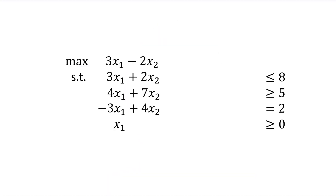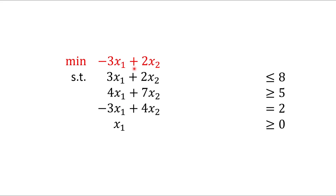Let's look at an example LP which is obviously not in standard form. To bring it into standard form we must address its issues. The first issue is that it wants to maximize a linear objective, whereas standard form requires minimization. We fix this by minimizing minus the objective — maximizing some function is equivalent to minimizing minus one times that function.